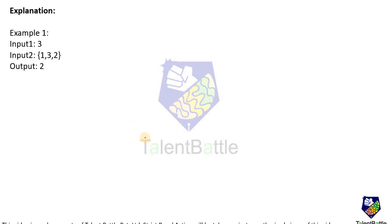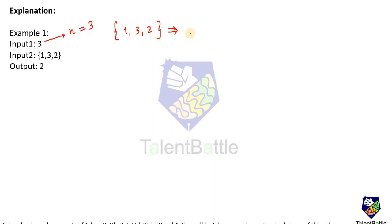Let us elaborate based on the provided test case. We have two inputs: n equals three, and the array elements are 1, 3, 2. This arrangement [1, 3, 2] is one possible way. We need to find various possible arrangements and for each, compute the sum of absolute differences of adjacent elements. For [1, 3, 2]: absolute difference of 1 and 3 is 2, plus absolute difference of 3 and 2 is 1, giving a total sum of 3.